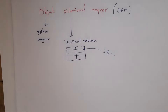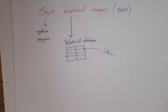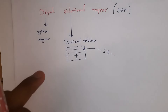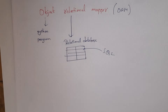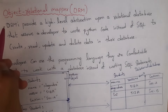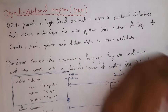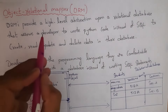Normally, in order to create a relational database we need to learn Structured Query Language, shortly called SQL. But with ORM, there is no need to learn SQL — directly using Python itself we can create a relational database. ORM provides a high-level abstraction upon a relational database that allows a developer to write Python code instead of SQL.